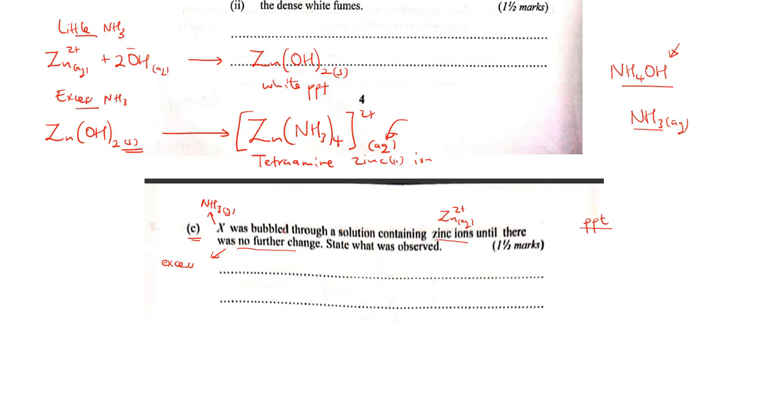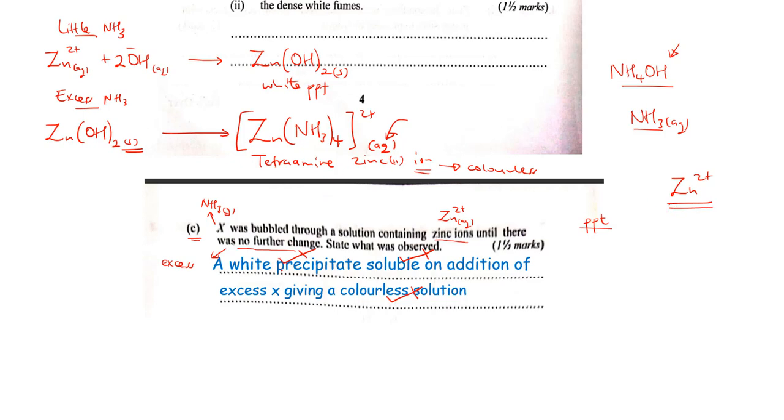When we bubble ammonia into zinc ions, we shall first see a white precipitate. This precipitate is soluble on addition of excess X, which is our excess ammonia, giving a colorless solution. This tetraammine zinc ion in solution is colorless. Sometimes in practicals we may need to write these equations, but in this case we just need to know the knowledge about how we can confirm different cations. In this case, the zinc ion - we shall see white precipitate due to formation of zinc hydroxide, and then this precipitate is soluble on addition of excess ammonia giving a colorless solution, which is one and a half marks.